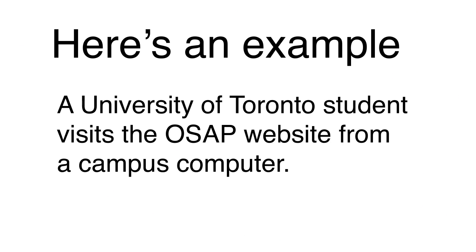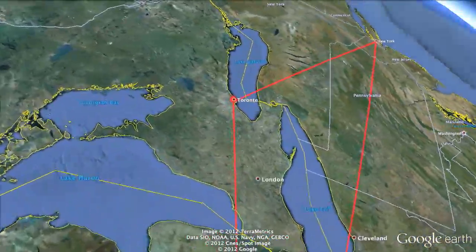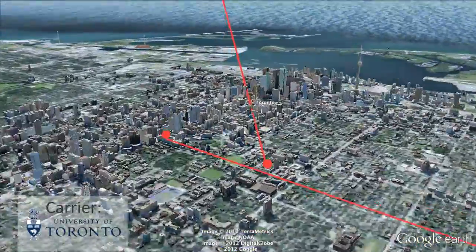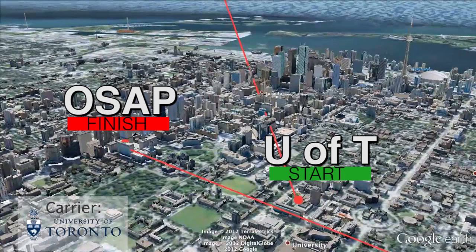Let's follow the route that data packets of a University of Toronto student take when communicating online with the Ontario Student Assistance Program, better known as OSAP. The OSAP offices are part of the provincial government complex only a very short distance from campus.